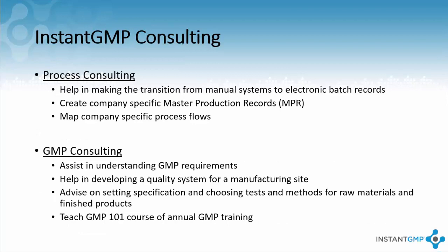Instant GMP can help you begin taking steps to GMP compliance in a few ways. If you purchase the software, we have experienced and trained personnel to help you transition from manual to electronic systems. With your company insight, the trainers can create company-specific master production records, or MPRs, and help you map out the process flow for product completion within the software. We can also help non-GMP sites understand the complexity of GMP requirements, aid in developing a quality system, advise on setting specifications for inventory, and teach GMP classes.